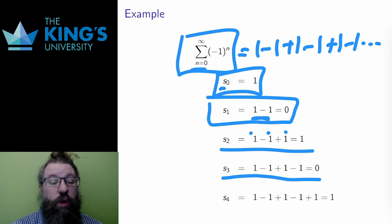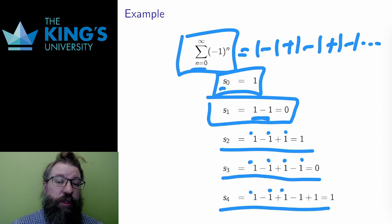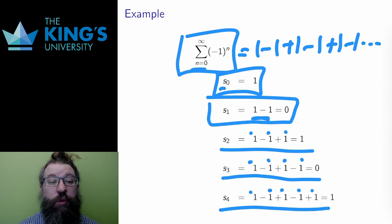s3 is the first four terms: 1, minus 1, plus 1, minus 1, which adds up to 0. s4 is the first five terms: 1, minus 1, plus 1, minus 1, plus 1. That adds up to 1.